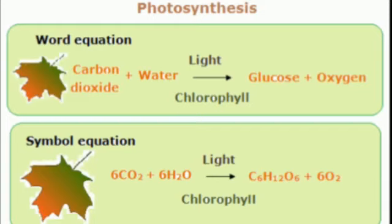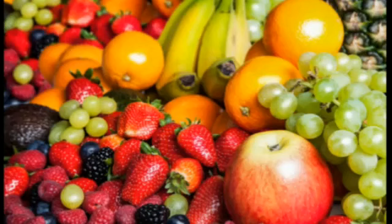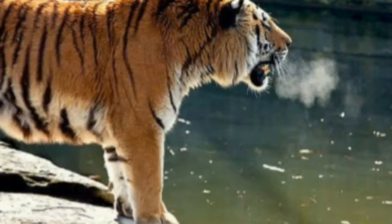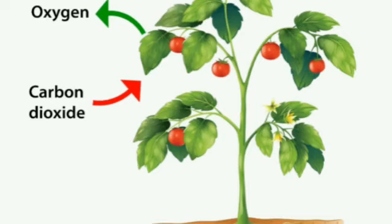The plants use this sugar to grow and make fruits, flowers and vegetables, which we need to live. Another by-product we get from photosynthesis is oxygen. The plants give oxygen through the process of photosynthesis, which we need to breathe and live. Animals and human beings breathe out carbon dioxide, which the plants need to grow, and plants give out oxygen, which we need to live.